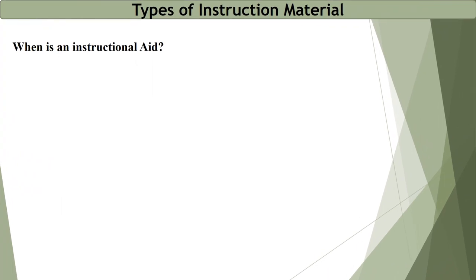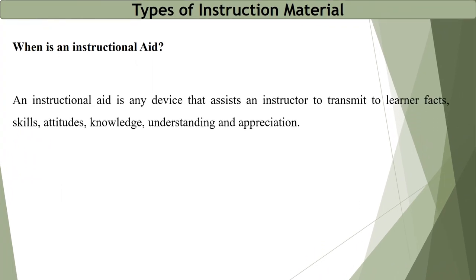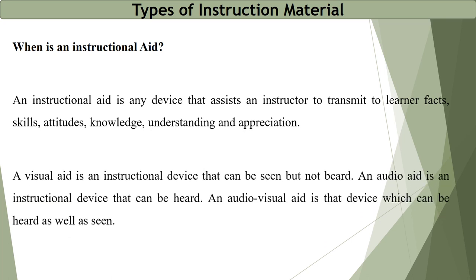What is an instructional aid? An instructional aid is any device that assists an instructor to transmit to learners facts, skills, attitudes, knowledge, understanding and appreciation. A visual aid is an instructional device that can be seen but not heard. An audio aid is an instructional device that can be heard. An audiovisual aid is a device that can be both heard and seen.